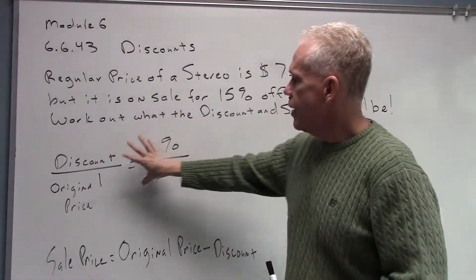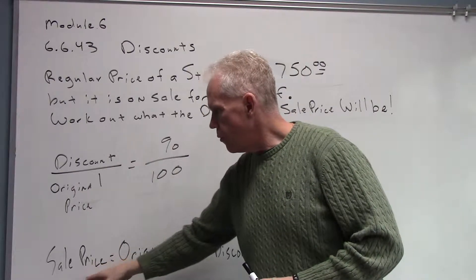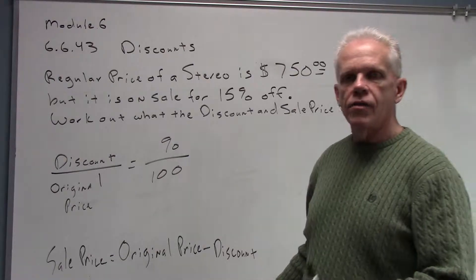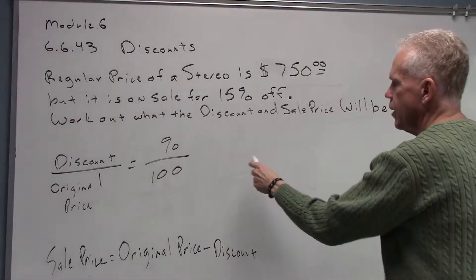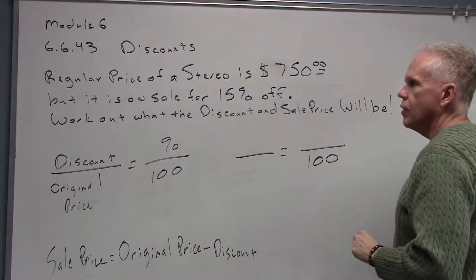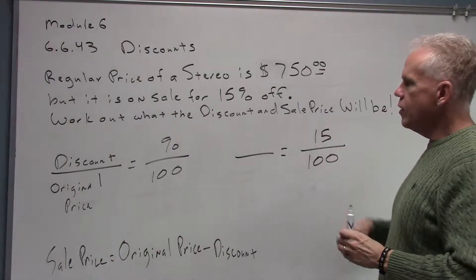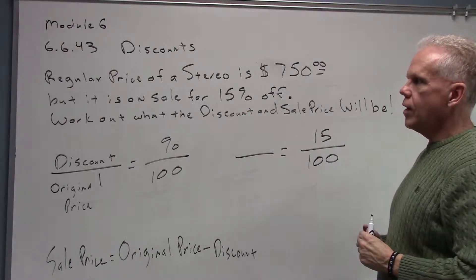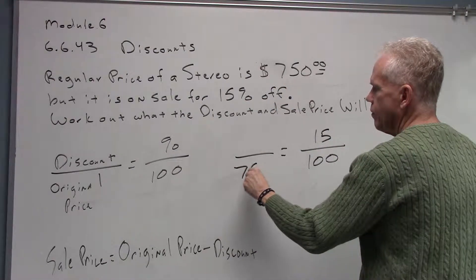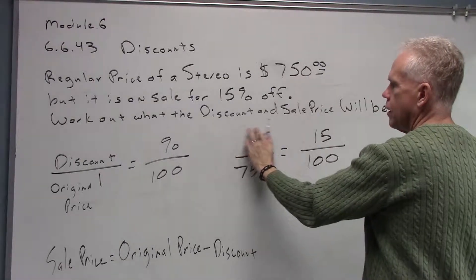We'll put our information into the proportion to calculate the discount. After that, our sale price will equal the original price minus the discount we figured out. So let's set up our proportion: 100 goes here on the bottom. Our stereo is 15% off, so 15 goes here — don't move the decimal, just keep it as 15. The original price of $750 goes here, and my unknown up top is the discount.